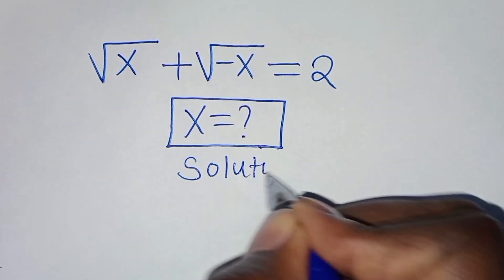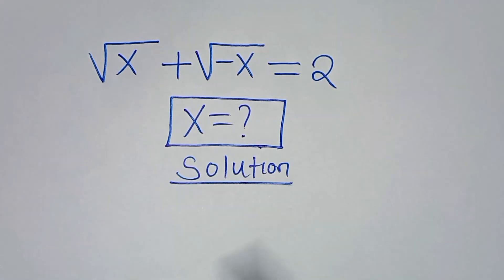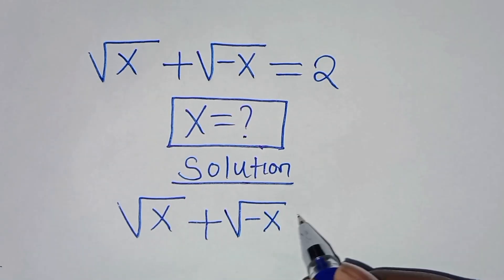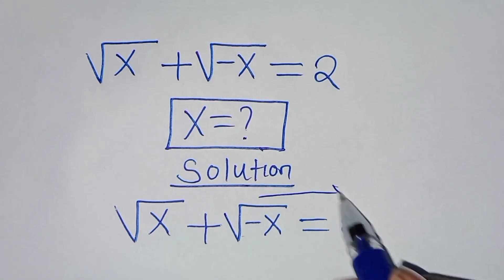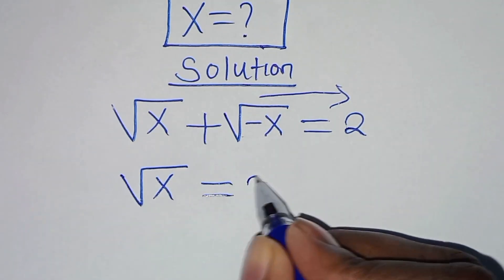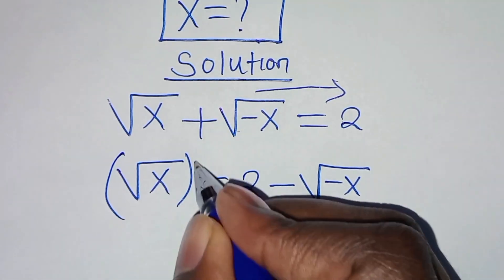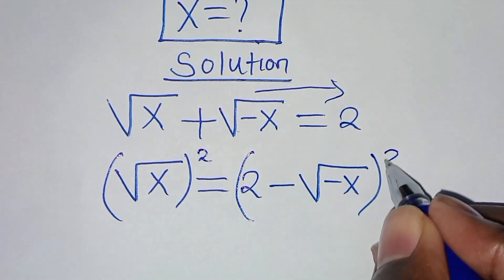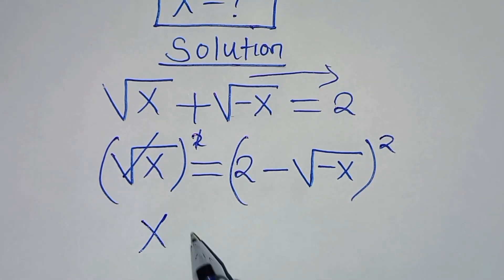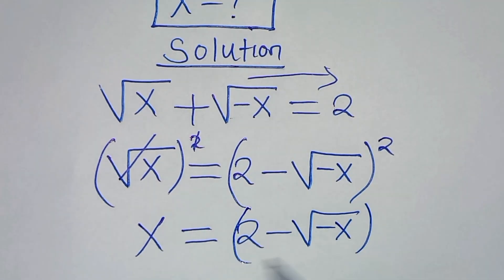Let's present the solution from here. The first thing to do is take square root of minus x on the right hand side. So we have square root of x equals 2 minus square root of minus x. The next step is to square both sides. So that square root of x squared eliminates the square root sign. So we have x is equal to 2 minus square root of minus x raised to power 2.